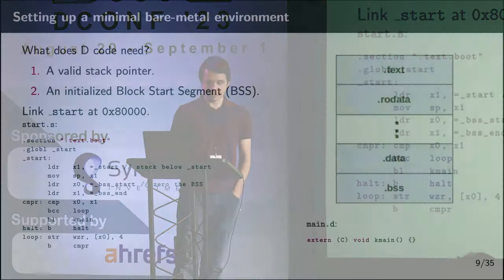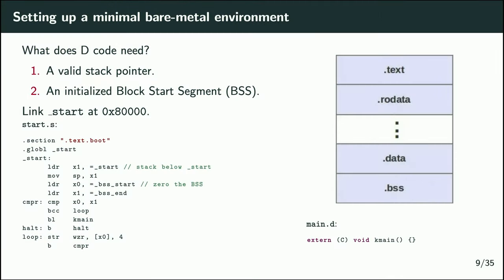To set up a bare metal environment for running D code, you first need an assembly stub that sets up a valid stack pointer — when a D function runs, it expects a real value in the stack pointer. You also need to initialize the BSS segment, which holds global variables initialized to zero. The BSS segment is not actually stored in the binary; only its start and end addresses are stored, and it's expected that you zero it out yourself. So in the assembly, we load a value into the stack pointer and then loop to store zero into all addresses within the BSS.